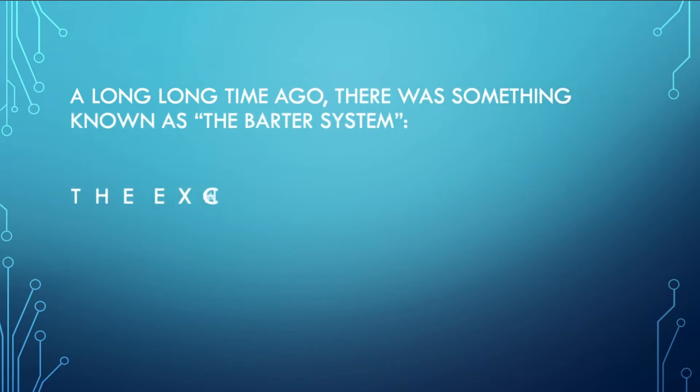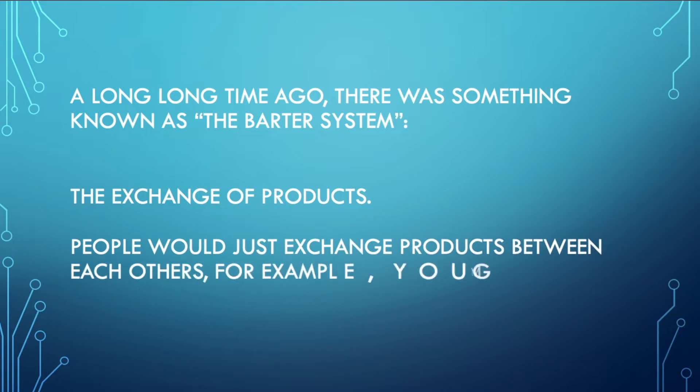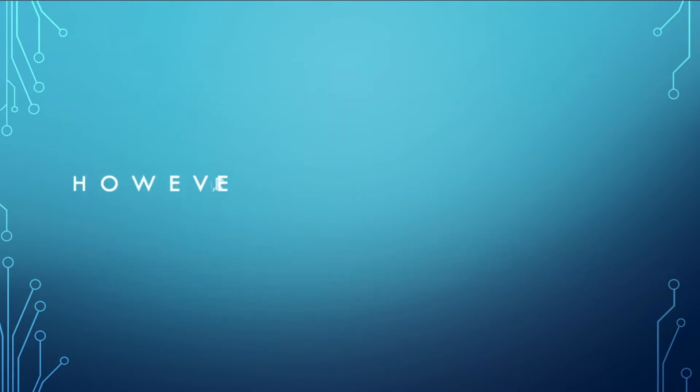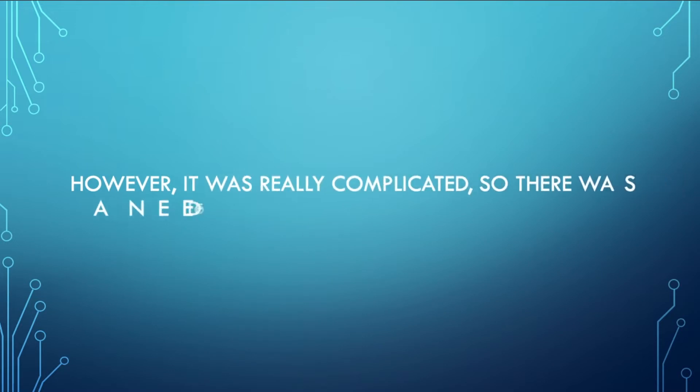Long time ago, there was something known as the barter system, the exchange of products. For example, you give me bread and I give you rice in return. However, it was really complicated, so there was a need for a common unit of exchange.